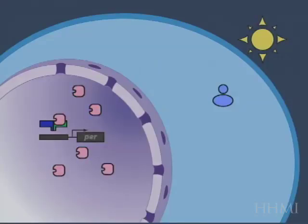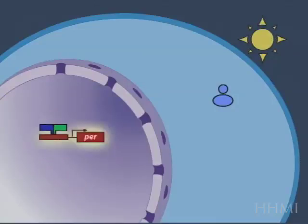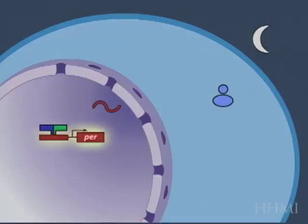And then in the morning, the PER protein is degraded, it disappears slowly over the course of the morning, until all of the protein is gone, and as the last protein molecule disappears, the CLOCK and CYCLE transcription factors are activated, and transcription and the cycle begins anew.